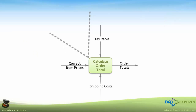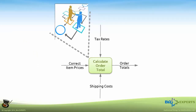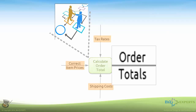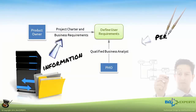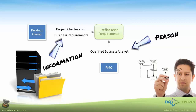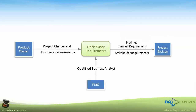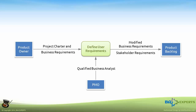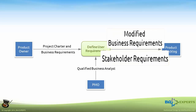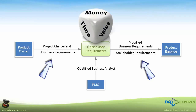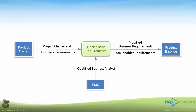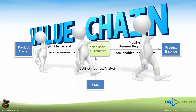Every business process is a more or less complex sequence of steps that changes something coming in to create something new. As such, it needs input, which could be information or any other resource. It uses the input to create output, whether the output is something altogether new or simply an altered version of the original input. Using the input to create the output adds some measurable value to the process. Thus, we often refer to the value chain of the organization.